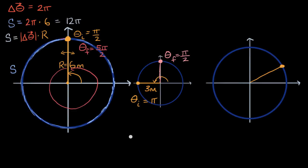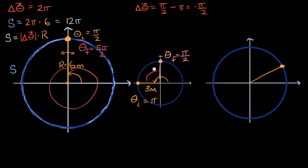The angular displacement is going to be theta final minus theta initial: pi over two minus pi, which equals negative pi over two. Does this make sense? Yes, because we went clockwise, and clockwise rotations by convention are negative. So we have a clockwise rotation of pi over two radians.